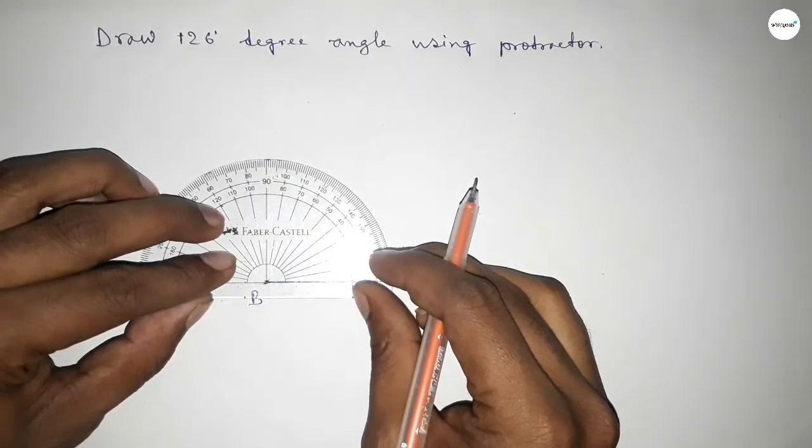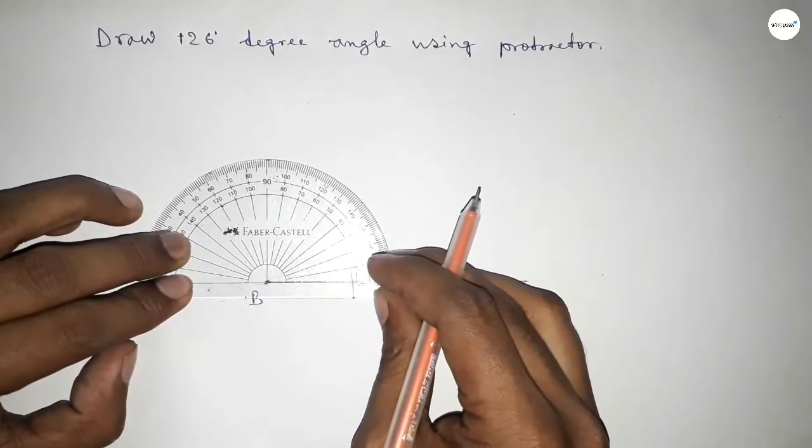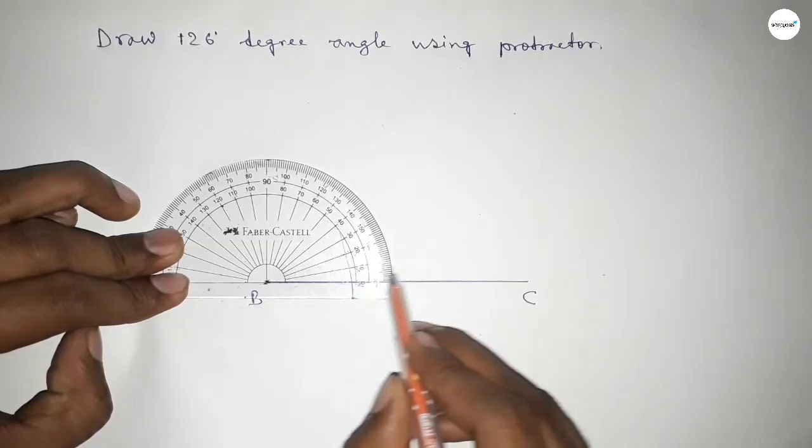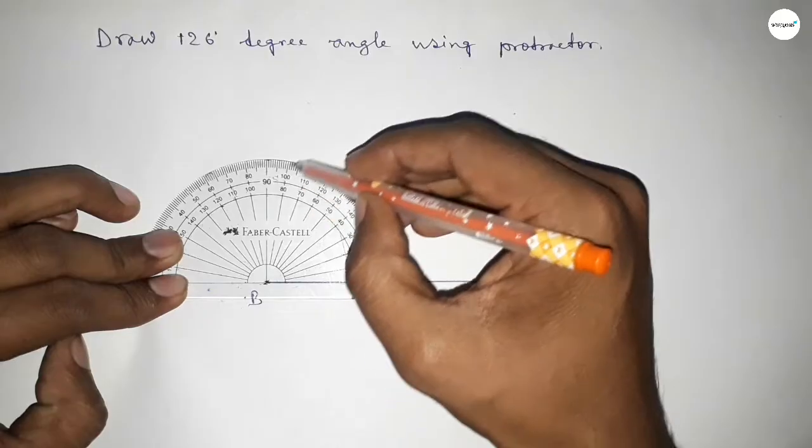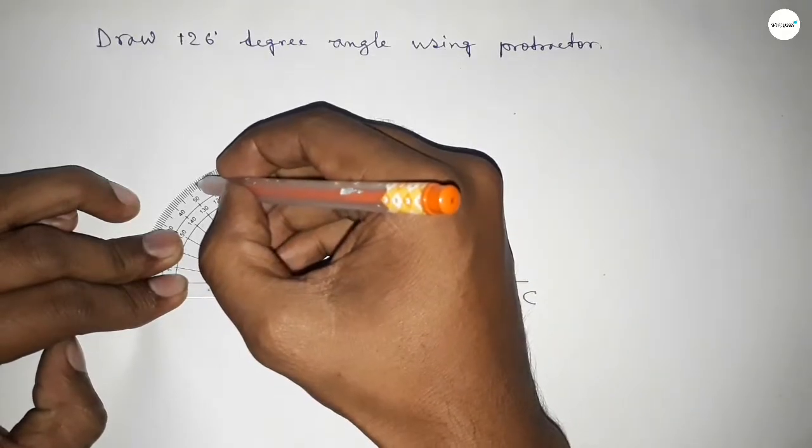Then we have to count the angles. So first putting the protractor on the point B perfectly, then counting the angle. So this is 0, 10, 20, 30, 40, 50, 60, 70, 80, 90, 100, 110, 120, 125, and this is 126. So this is 126 degrees.